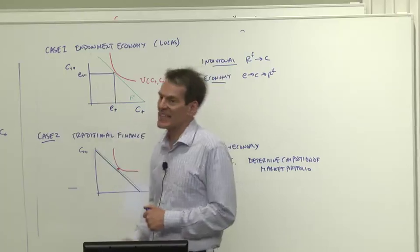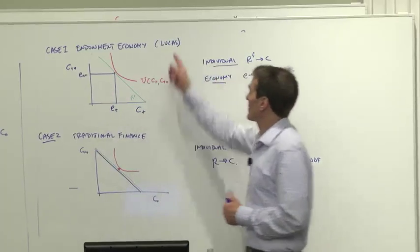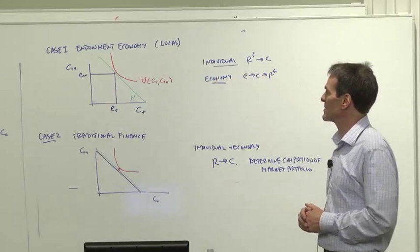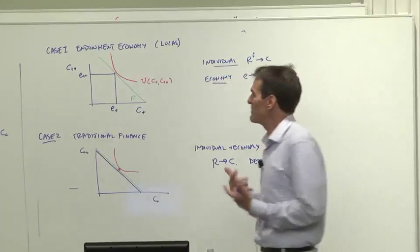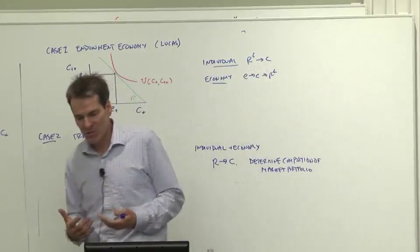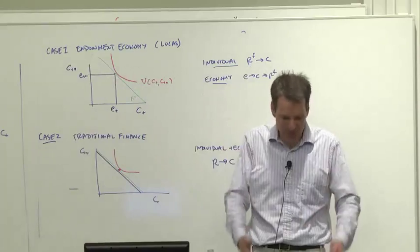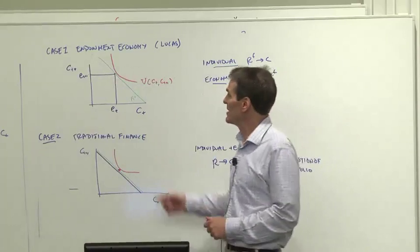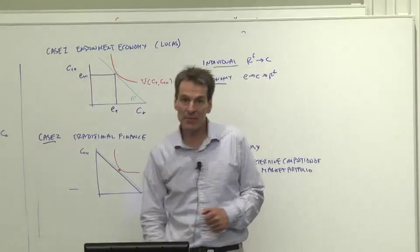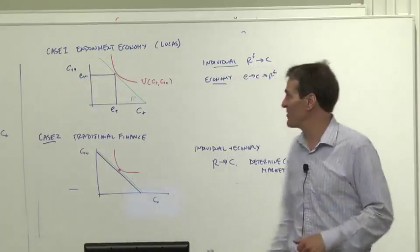Here's one case, the endowment economy, made popular by Bob Lucas in his famous paper. So one possibility for general equilibrium is we live in what's called the coconut economy. What we get to eat today is just how many coconuts fall from the trees. And that's called E, the endowment.